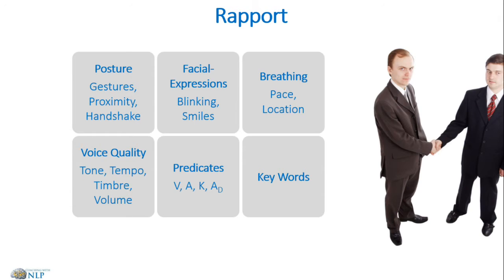Speed, of course, is how fast or slow someone speaks. Quality — some people speak very crisp and clear while others might have a raspiness to their voice. Volume is self-explanatory. These elements of tonality make up 38% of our communication.